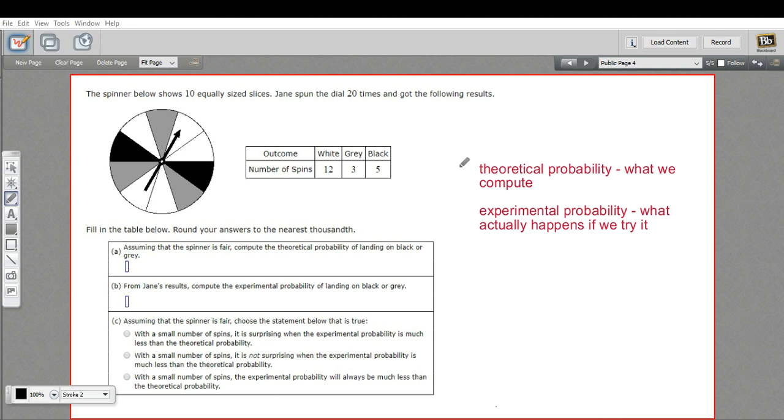So that's the difference between theoretical probability and experimental probability. Let's take a look at this problem. It says the spinner below shows 10 equally sized slices. And Jane spun the dial 20 times and got these following results. So this is experimental.